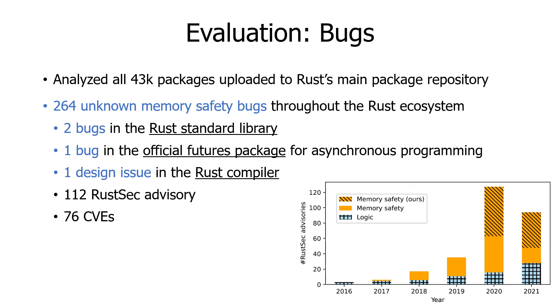The evaluation result is quite promising. We analyzed all 43,000 packages uploaded to Rust main package repository and found 264 unknown memory safety bugs throughout the Rust ecosystem. This includes two bugs in the Rust standard library, one bug in the official futures package for asynchronous programming, and one design issue in the Rust compiler that misuses Send and Sync. These are all code bases written and extensively reviewed by Rust experts. This indicates that bugs found by Rudra are subtle and non-trivial. They also resulted in 112 Rust security advisories and 76 CVEs. They represent more than half of the memory safety bugs known to the Rust Security Advisory Database since it started tracking Rust bugs in 2016.